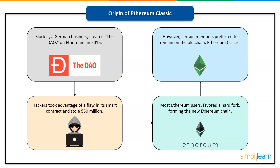However, certain members of the community opposed the fork, preferring to follow the principle of 'code is law,' and remained on the old chain, renaming it Ethereum Classic. They commonly refer to Ethereum Classic as the original Ethereum coin since it preserves the ancient core of the Ethereum blockchain as it existed before the DAO assault.